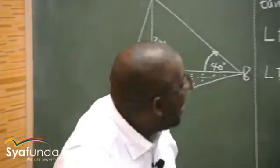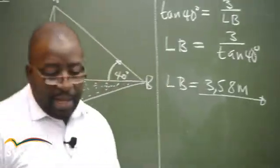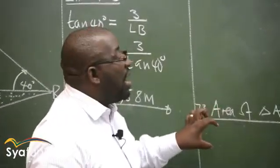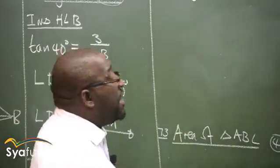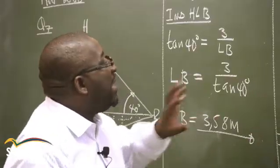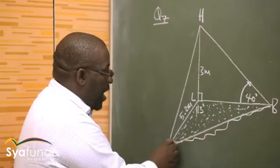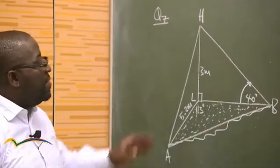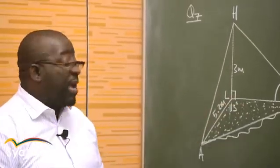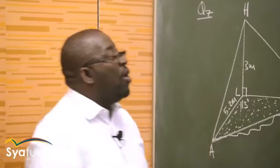Let's look at the next question. Number two, we're required to find the length of AB. This one we're looking for a length. Whenever we're looking for a length, remember there are three rules: the sine rule, the cosine rule, and the area rule. AB is in which triangle? In these three dimensions, it is exactly in this one. I'm using triangle ALB or ABL to find this side AB.